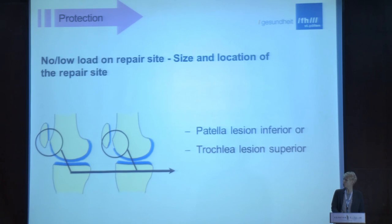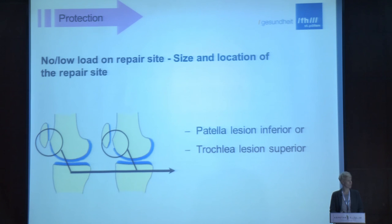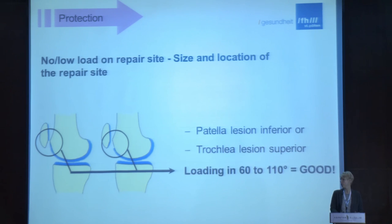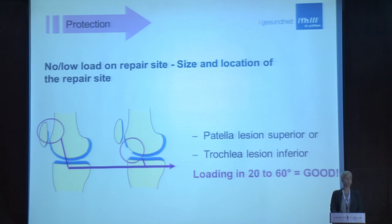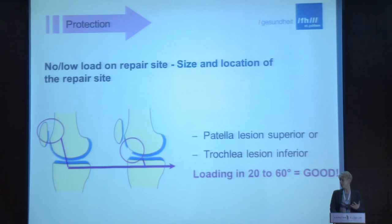It's very important to put no or low load on the repair site, so you need to know where the defect is. For example, if you have a lesion in the patellofemoral joint and the lesion is inferior or at the trochlear superior, you can perform loading activities in 60 to 110 degrees of knee flexion because there is no articulation of the defect. On the opposite, if your lesion is in the superior part of the patella or inferior part of the trochlea, implement loading activities in 20 to 60 degrees of flexion.